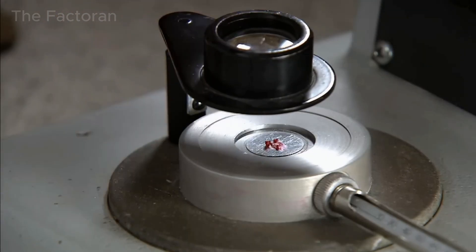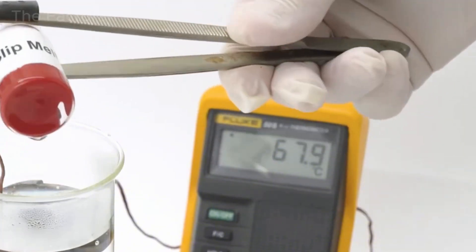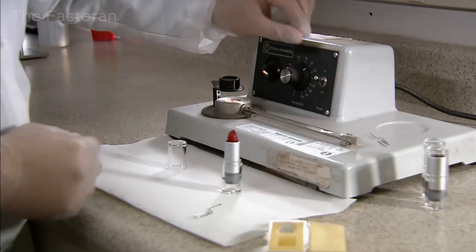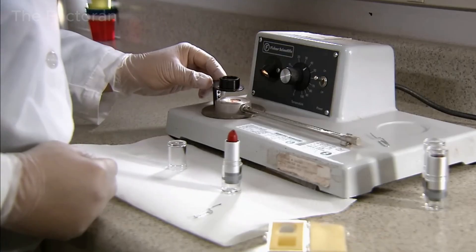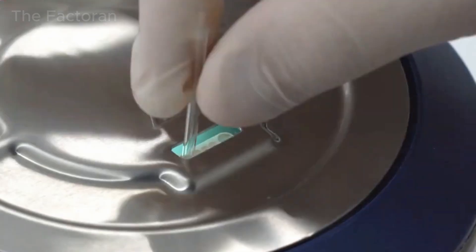The technician uses a magnifying lens to closely observe the moment the lipstick begins to soften and melt, while a thermometer precisely records the temperature at which this occurs. The melting point must fall within an approved range to ensure the lipstick will not soften or melt inside a handbag on a hot day.